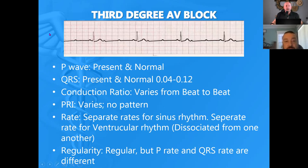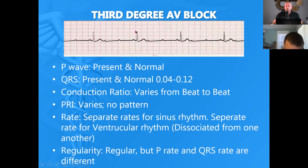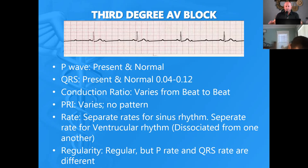Third degree blocks: if I follow the P waves they march out, and if I follow the QRS complexes they march out — but they don't march out to each other. Think of it as two drummers playing different beats. On this rhythm we can't use atropine because there's total disassociation between the atriums and ventricles. So we go directly to pacing. It's a slow rhythm at a rate of 40, and this patient isn't hemodynamically stable. Medicine won't work — we have to go to Edison medicine. Pacing is our preferred method.